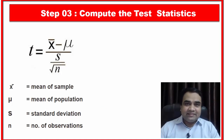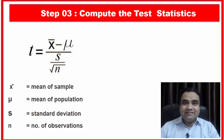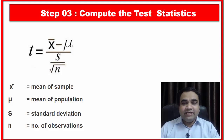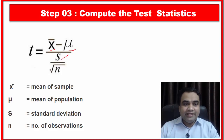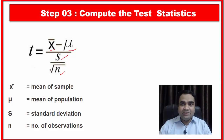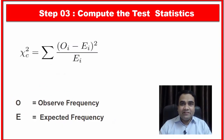The next test is the t test. You use the t test when your sample size is less than 30 and you do not know the population standard deviation sigma, but you do know the standard deviation of your sample. Here x-bar is the sample mean, mu is the population mean, s is the standard deviation of the sample, and n is the sample size. In the z test we use the population standard deviation, whereas in the t test we use the sample standard deviation s.